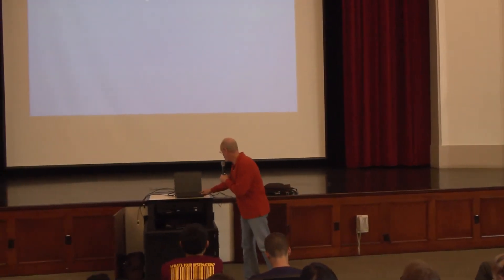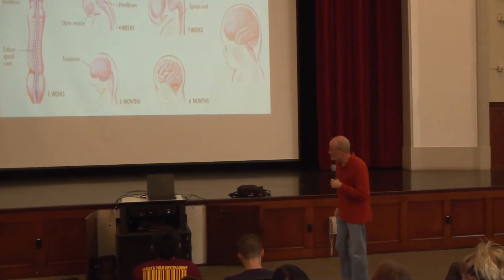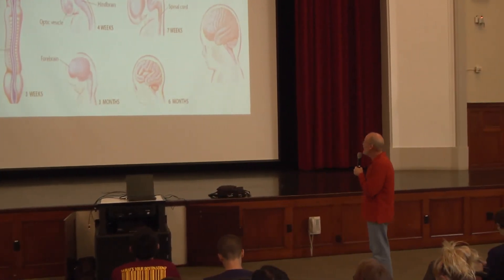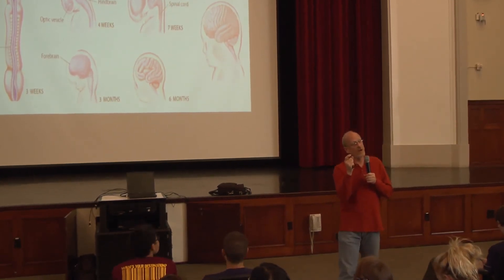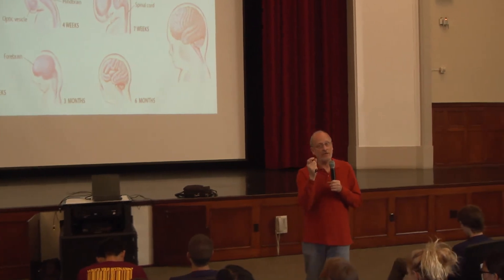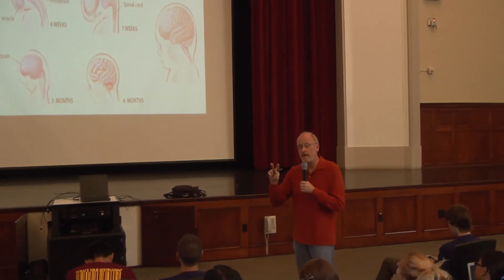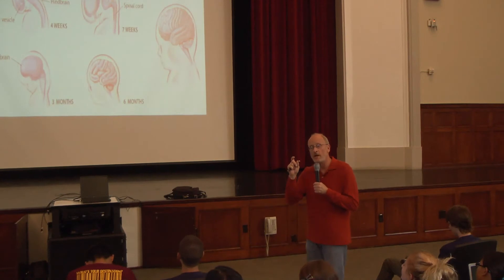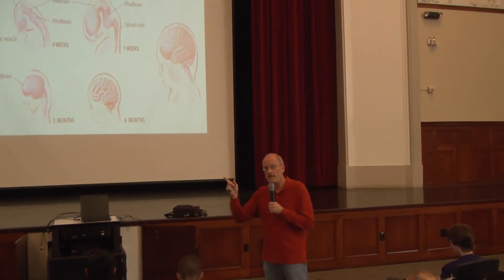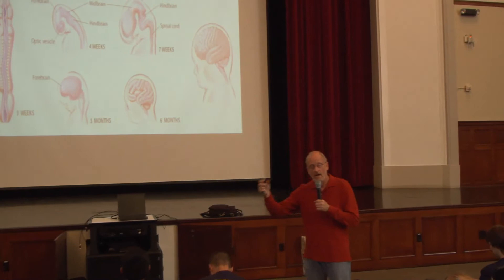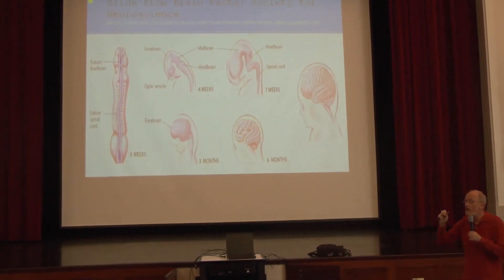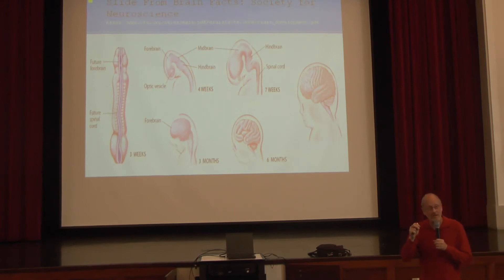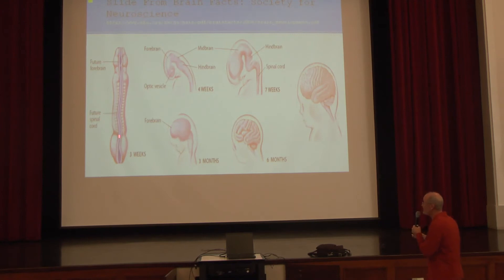Let's talk about development of the nervous system. You start out as a single cell — a combination of genetic information from your parents. Then two cells, four, eight, sixteen — and these cells begin to organize themselves in very specific ways based on genetic information. In the nervous system, a tube is formed — a tube-like structure with a lumen or space surrounded by cells, like a pipe. In that pipe is what will become cerebral spinal fluid.